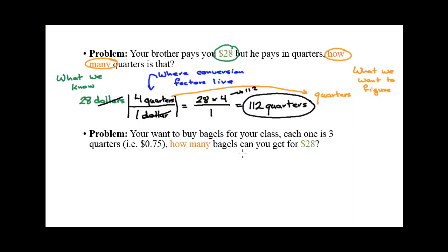But let's say that you are a really nice student, and you want to buy bagels for your class. And you find out that each bagel costs three quarters. If you take the $28 that your brother gave you, how many bagels could you buy?